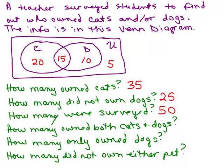How many owned both cats and dogs? When they say both cats and dogs, that means they had to own a cat and a dog. That would be right here in the intersection. These 15 in the intersection are people who are in the cat circle and also in the dog circle — the people that owned both cats and dogs. So we have 15.